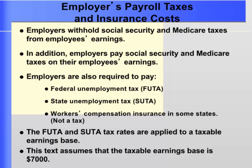Employers must pay the following payroll taxes: state unemployment tax (SUTA), federal unemployment tax (FUTA), Social Security tax (one-half of employees'), and Medicare tax (one-half of employees'). Only employers pay federal unemployment tax — the employee does not pay FUTA. State unemployment taxes, SUTA, are levied by the state government against employers to benefit unemployed workers. The FUTA and SUTA tax rates are applied to a taxable earnings base, assumed here to be $7,000. Employers get a credit for state unemployment taxes paid, applied against their federal unemployment tax liability, yielding a net FUTA rate of 0.6%.